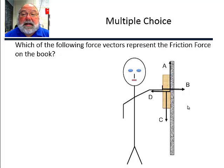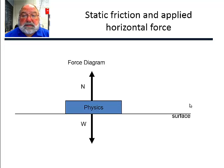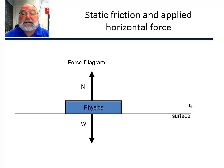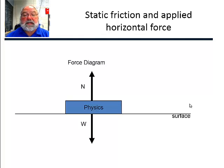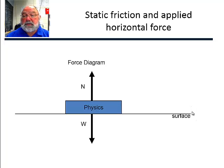Let's go through some free body diagrams of friction and horizontal forces. Here's our physics book lying on a table. We have the normal force perpendicular to the surface and the weight straight down toward the center of the earth. The book isn't moving and nobody's trying to make it move, so there is no friction. Static friction is zero.